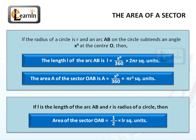Substituting the formula of the length of an arc L in the area of the sector equation: if L is the length of arc AB and R is the radius of the circle, then the area of sector OAB is equal to one-half times L times R square units.